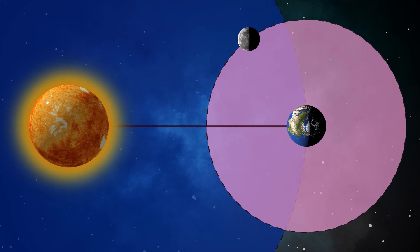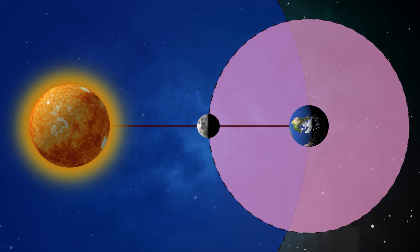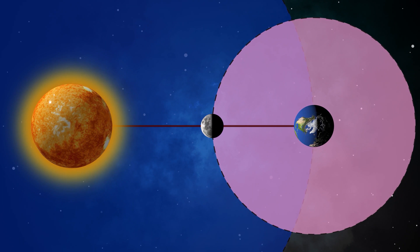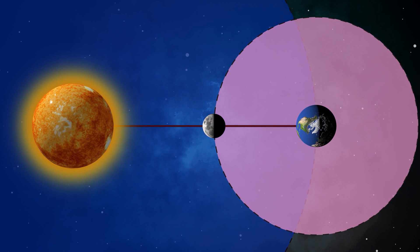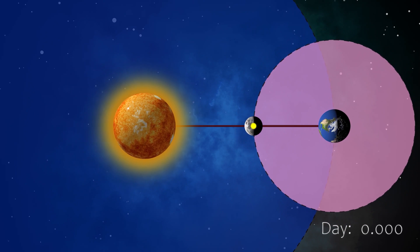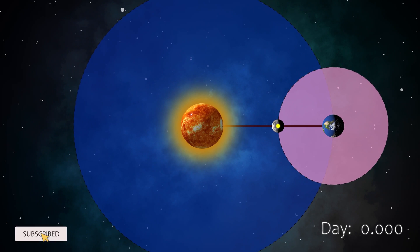This alignment of the earth, sun, and the moon occurs on the new moon day where the moon is in between sun and earth. Let's again mark the current position of the moon with this dot and keep track of the time as the moon goes around the earth.